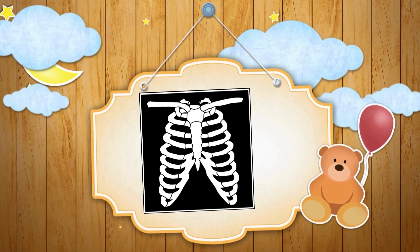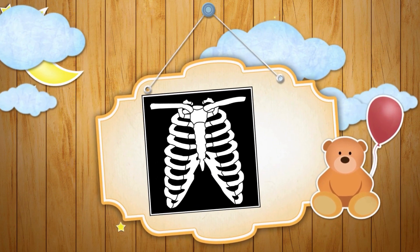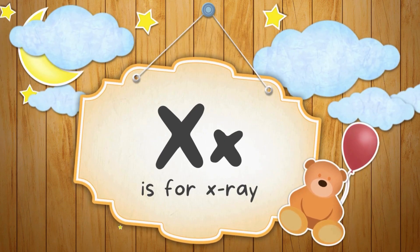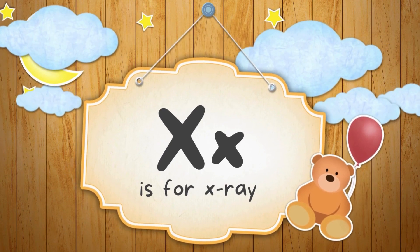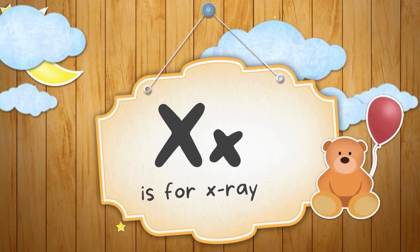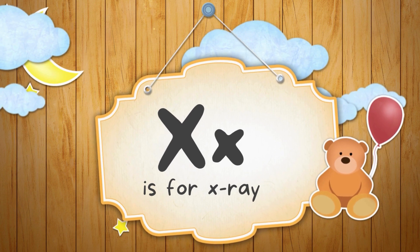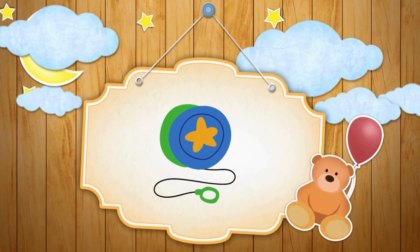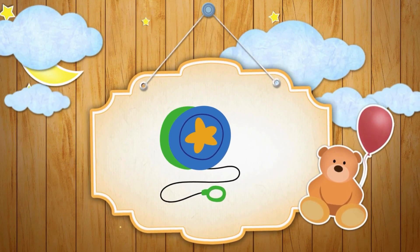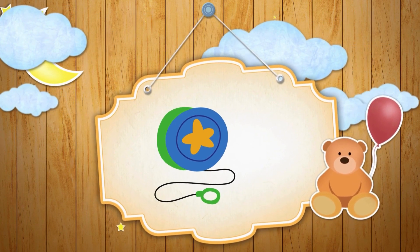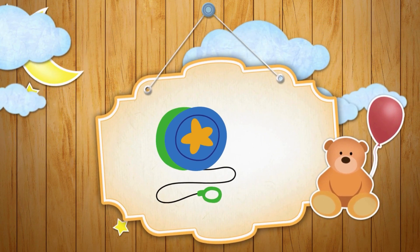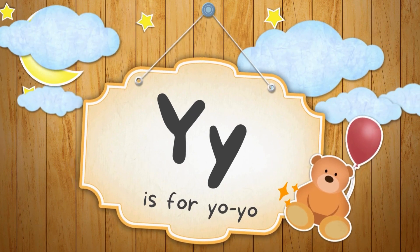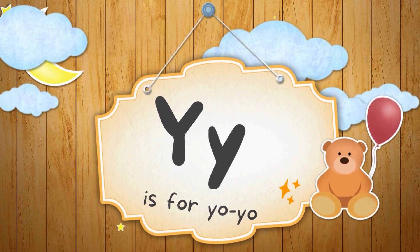See the image and guess the alphabet. X is for X-ray. See the image and guess the alphabet. Y is for Yo-yo.